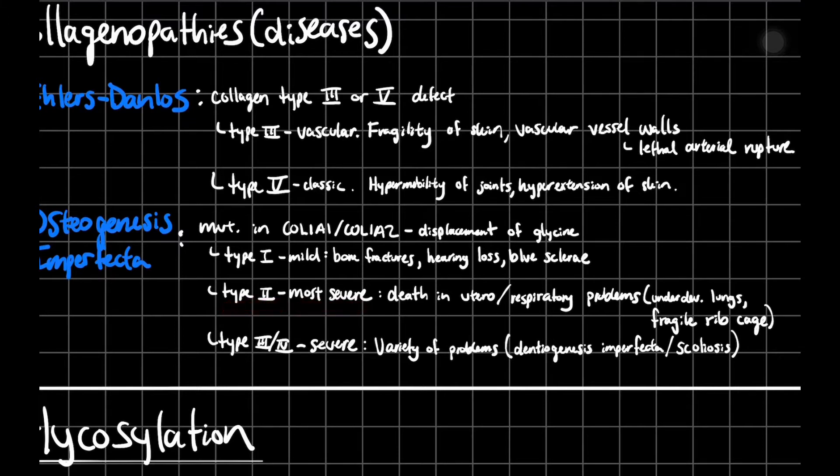Type 2 is going to be your most severe. You're going to die in utero. So these always happen in babies. They don't get born and they just die. And it usually is because of respiratory problems, because of underdeveloped lungs and also fragile ribcages, because that Col1A1 and 1A2 are not functioning properly. So you can't even get a correct ribcage. That's why you die. Type 3 and type 4 are going to be also severe, but you can survive with the correct treatment and if you detect it early. It's going to present with a variety of problems. It could be dentinogenesis imperfecta or scoliosis. This is going to be in your teeth and this is going to be in your back.